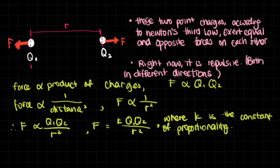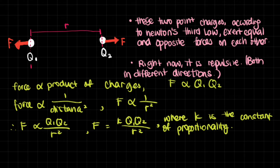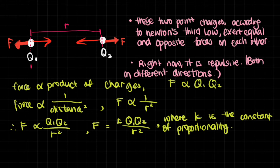These two point charges, according to Newton's Third Law, exert equal and opposite forces on each other. If the forces both point away from each other, they are repelling — meaning they have the same sign charges, either both negative or both positive. The same applies to attractive forces: if one is positive and one is negative, the forces point toward each other but are still equal and opposite. This holds regardless of whether the force is attractive or repulsive.